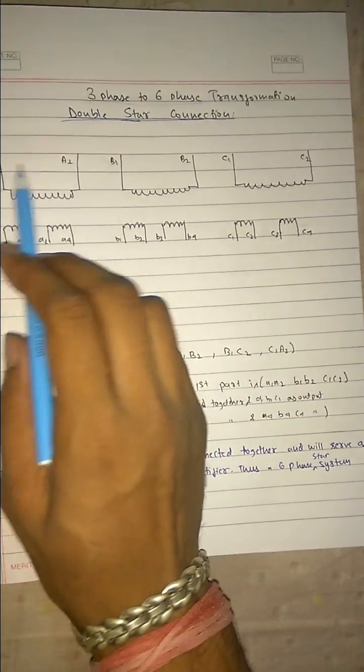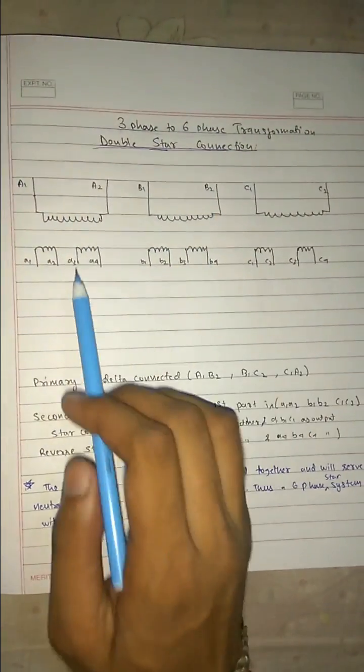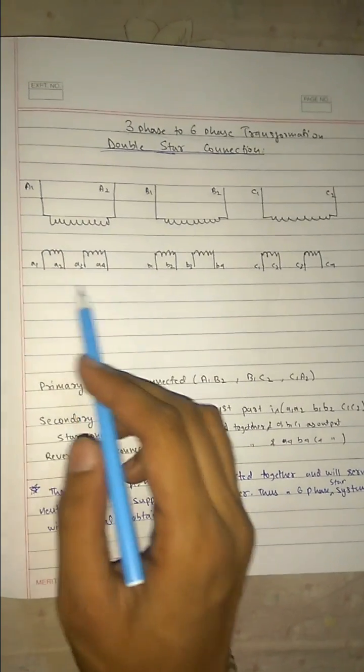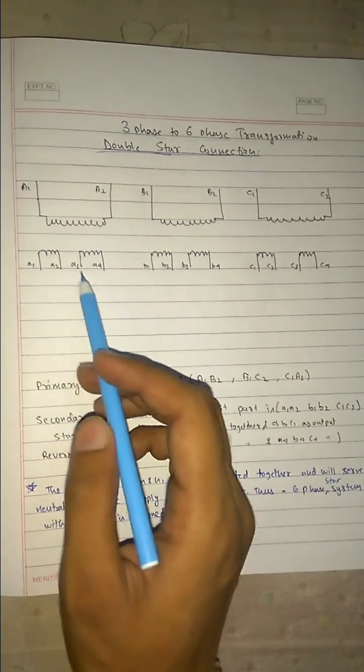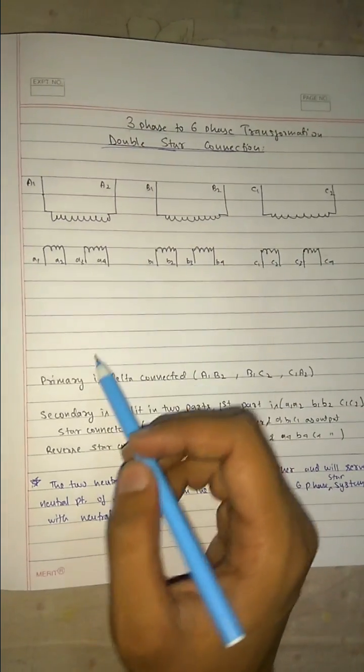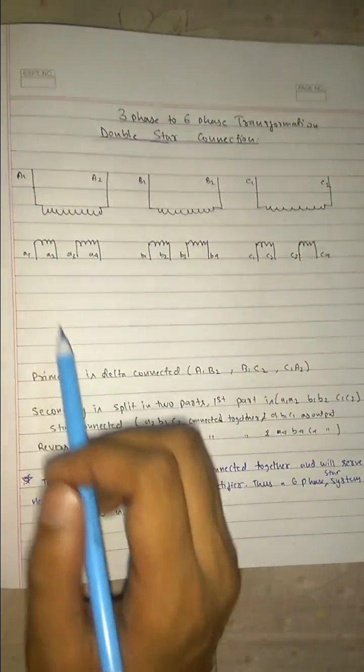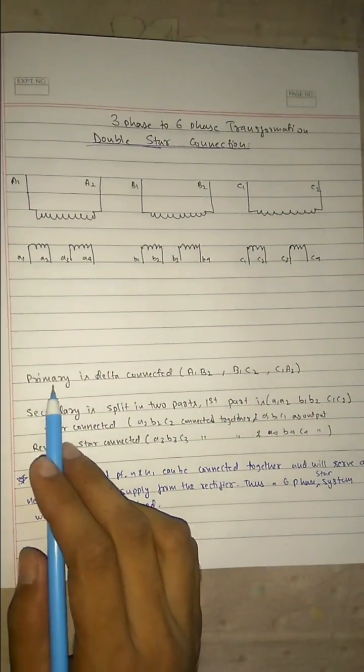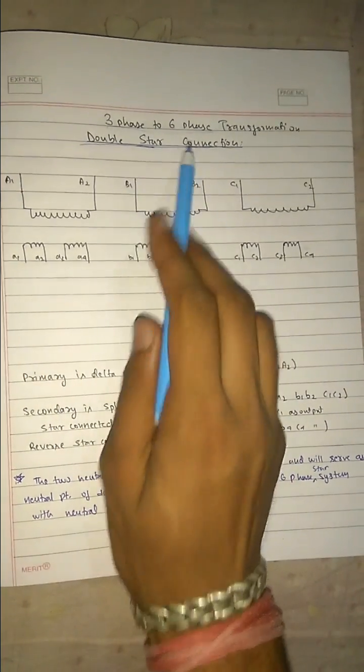Here you can see we have 3 primary windings and 3 secondary windings, but the secondary is not 3 because each is divided into 2 parts. Now a few things you need to keep in mind for this whole setup is primary is delta connected in double star.